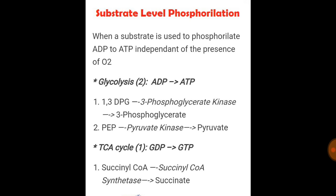There are two substrate level phosphorylation steps in glycolysis and one in the TCA cycle — very important. When a substrate is used to phosphorylate ADP to ATP independent of the presence of oxygen, this is called substrate level phosphorylation. In glycolysis, the first step is 1,3-DPG converted to 3-phosphoglycerate by 3-phosphoglycerate kinase.